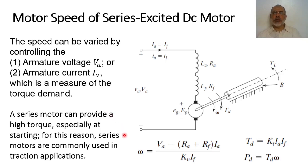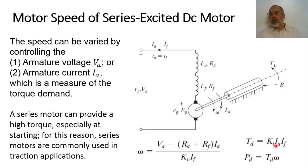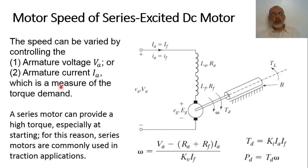These are the average parameters of the series excited DC motor. The speed is a function of the armature voltage and the armature current, where the armature current equals the field current. By controlling the armature voltage and the armature current we can control the speed. The developed torque is KT × Ia², and the developed power equals the developed torque multiplied by the speed. Speed can be varied by controlling the armature voltage Va or the armature current Ia.